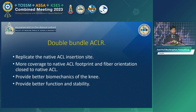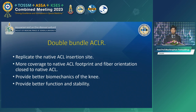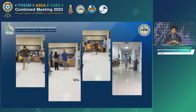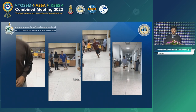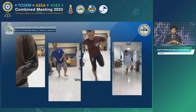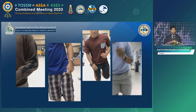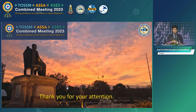So why do I perform double bundle ACL reconstruction even though the technique is quite difficult? Because this technique can replicate the native ACL insertion site, cover more of the native ACL footprint, and the fiber orientation is close to native. This provides better biomechanics of the knee, better function and stability. Finally, I hope our patients can return to their previous sport and prevent future degenerative joint disease. Thank you for your attention today.